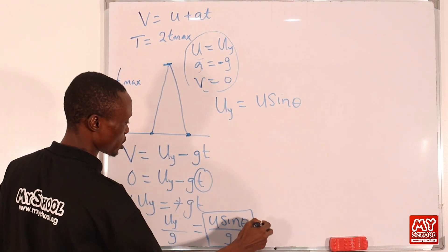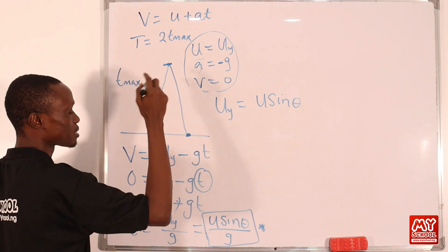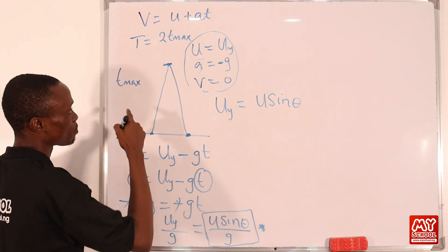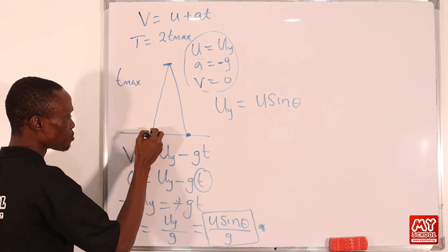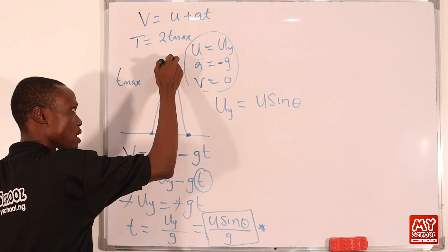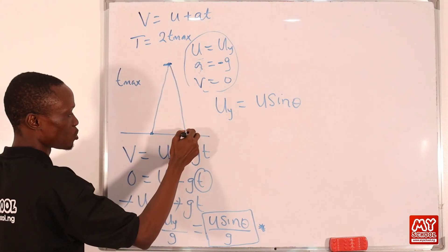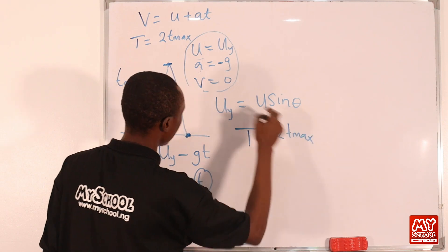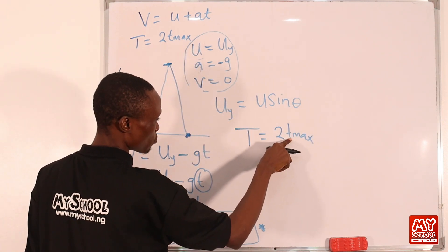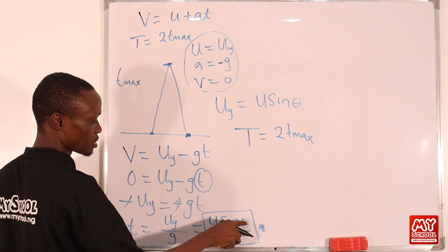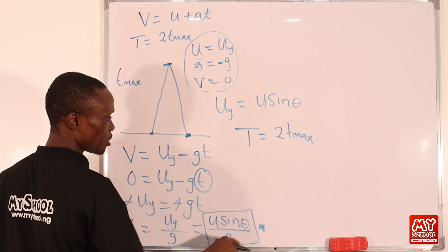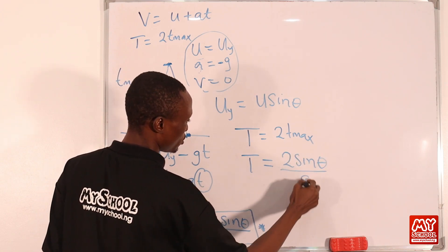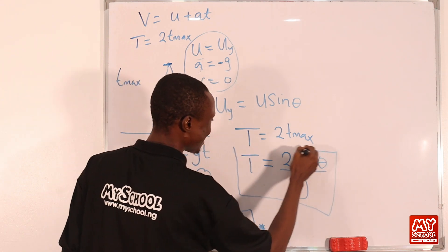Our focus is time of flight, not just time to reach maximum height. Since T = 2 × t_max, and t_max = u sin θ / g, substituting gives: T = 2u sin θ / g. This is the formula for calculating the time of flight of a projectile.